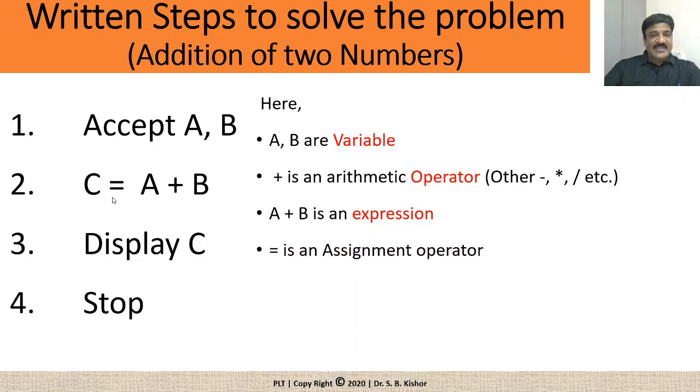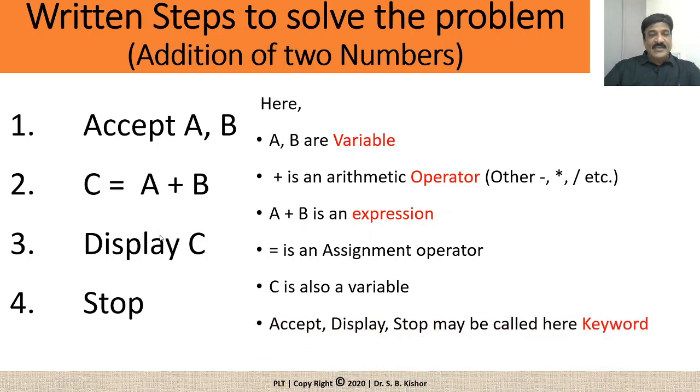Then, what is equal sign? Equal sign assigns the result of this. After performing the addition of these two, the value will be assigned to C. So, C is also a variable, why? Because as the value of A and B is going to be changed, the value of C will also get changed and hence C is also referred as a variable.